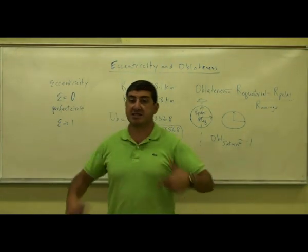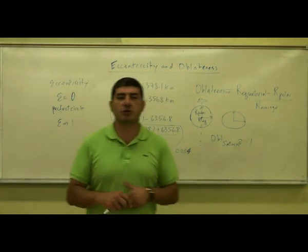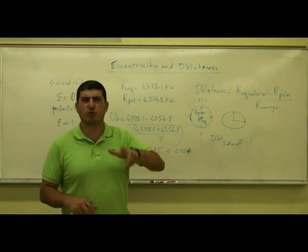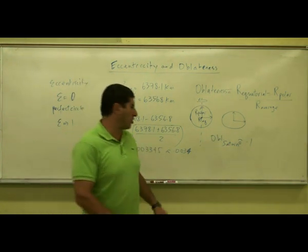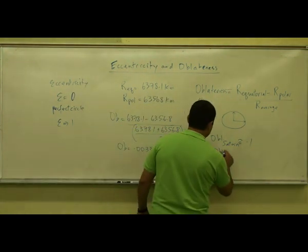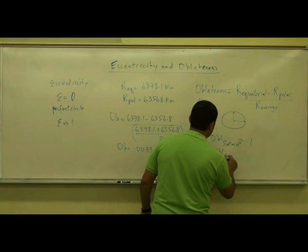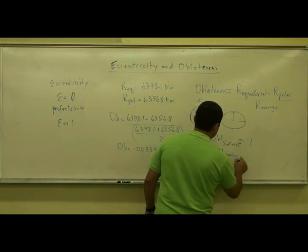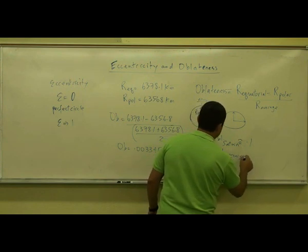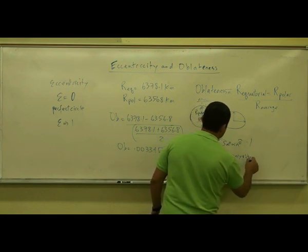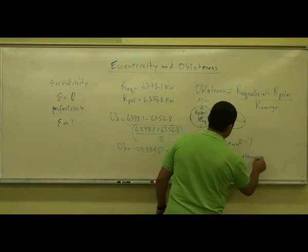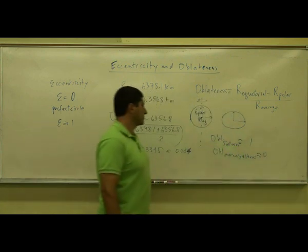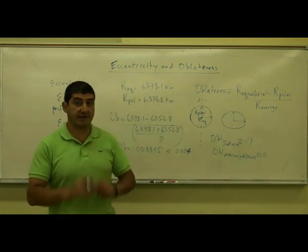Out of the planets, the least oblate would be Mercury and Venus — they approach an oblateness of zero, so they're more spherical.